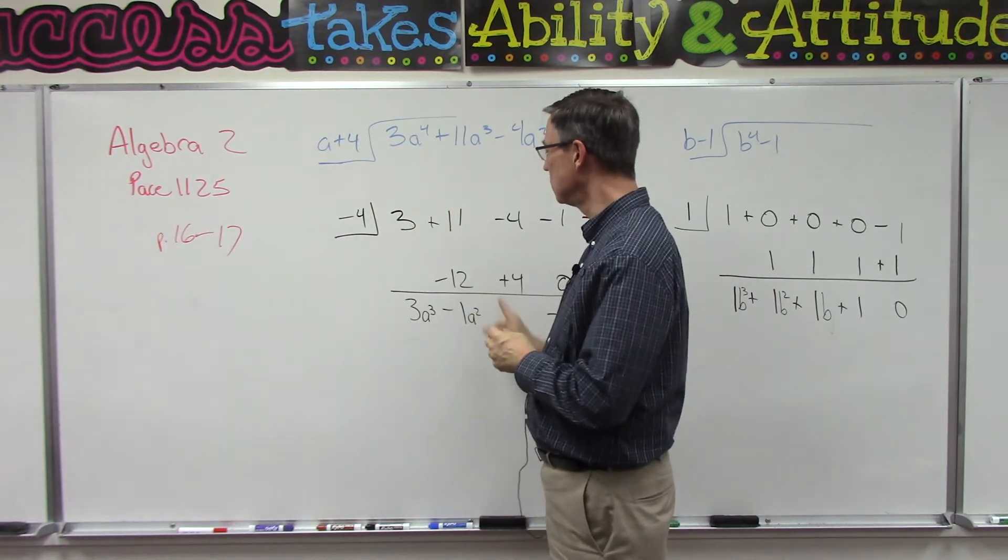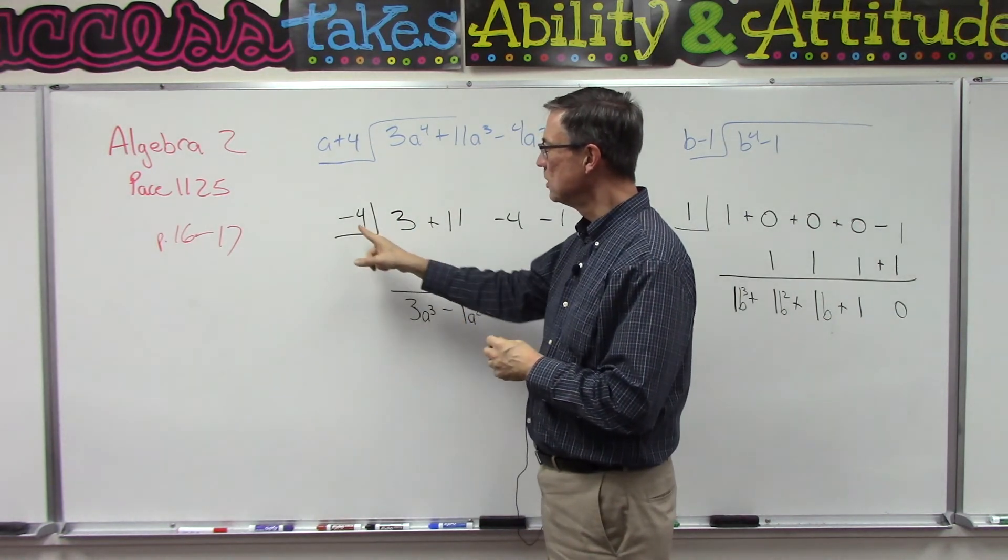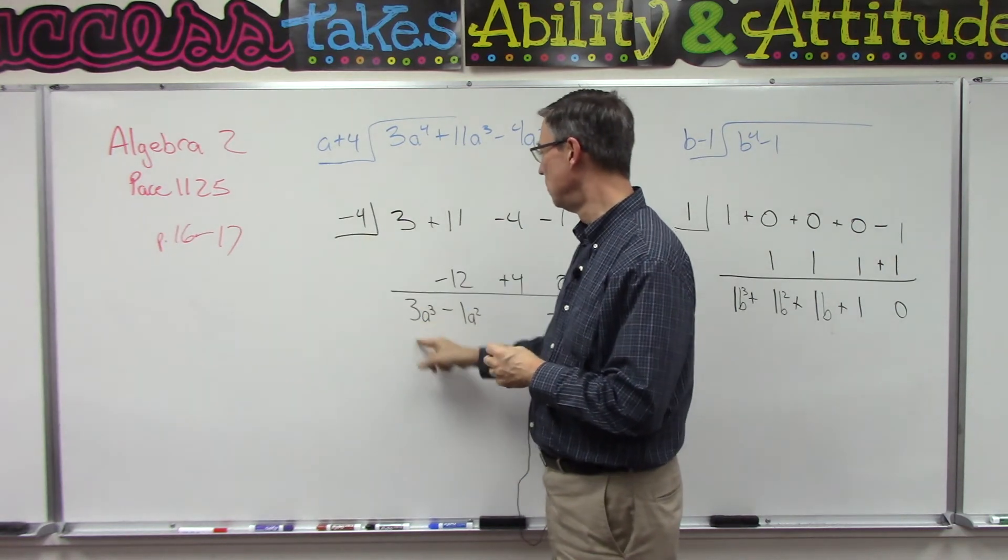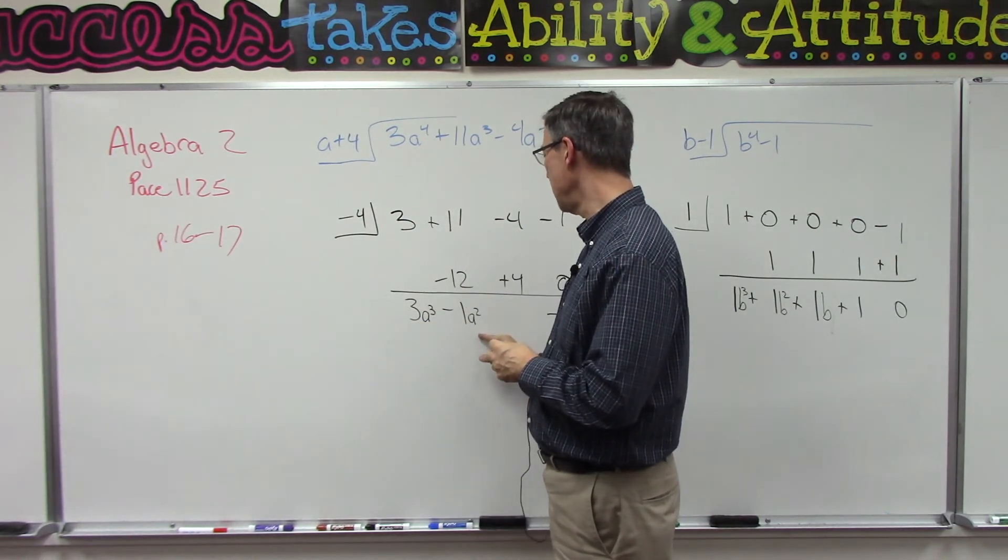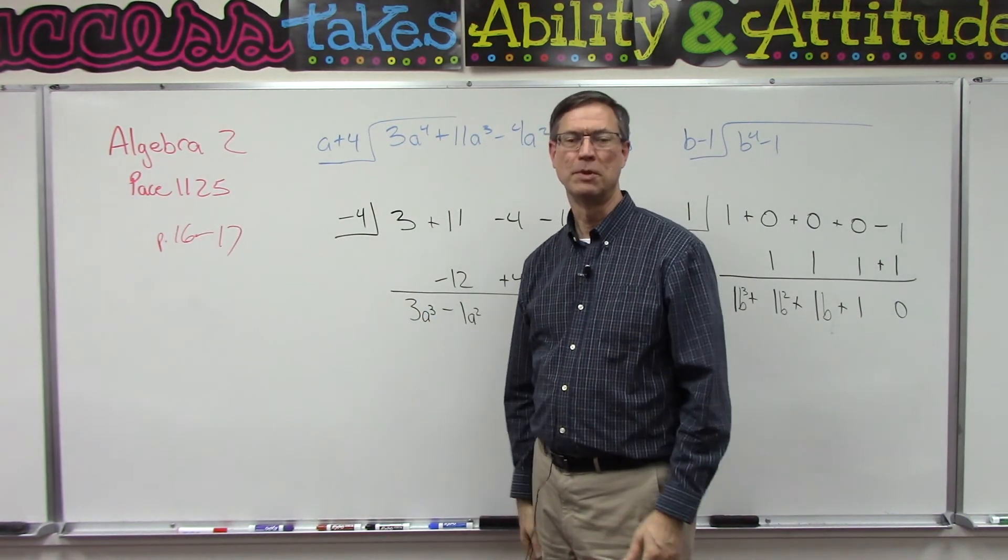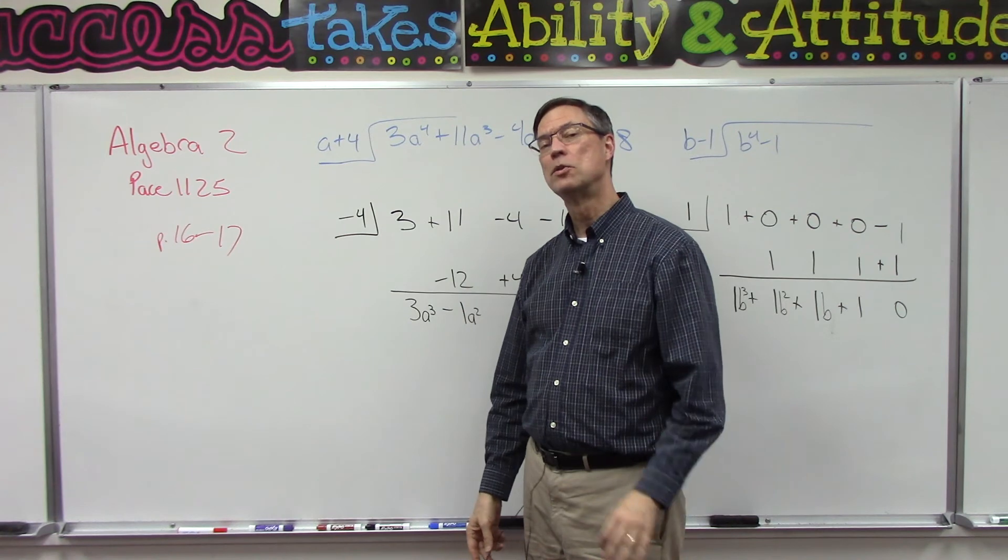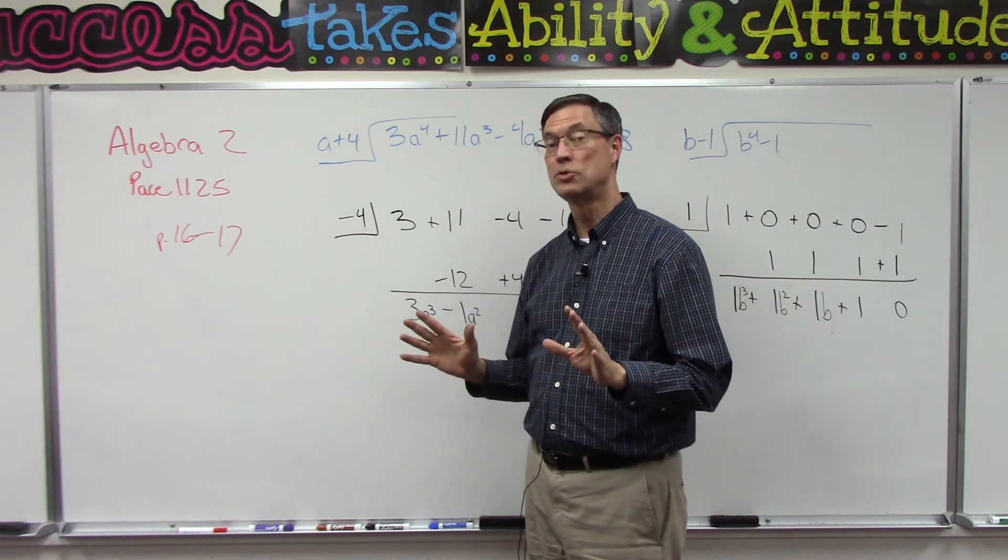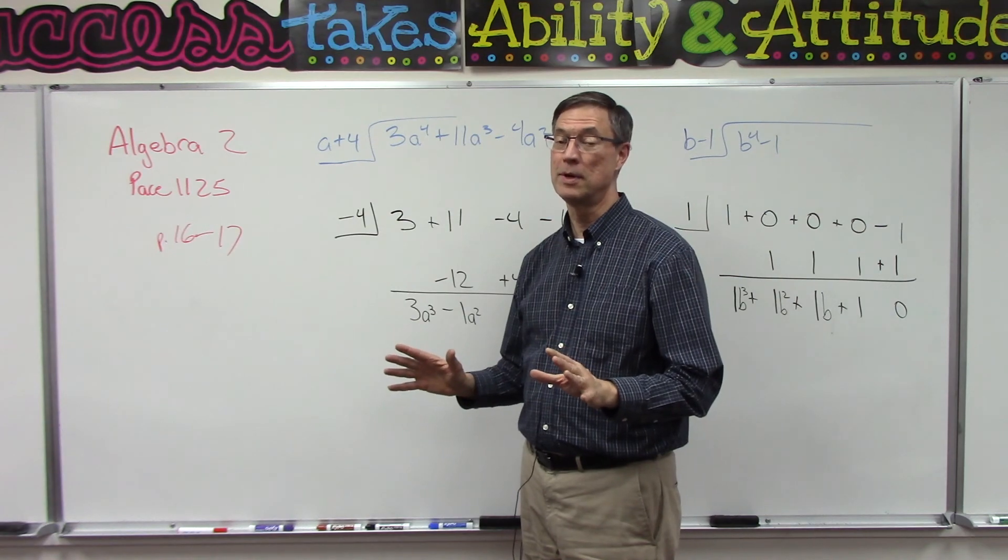They have the shortcut shown with all of these steps in the score key. You just change this to its opposite, bring this one straight down, multiply, put it here, add, multiply, bring it here, etc. It shouldn't be too bad. Hopefully have some fun with it. Don't fret about it being called synthetic division—think of it as a shortcut. We all like shortcuts.